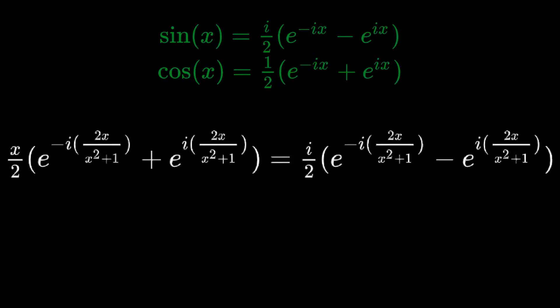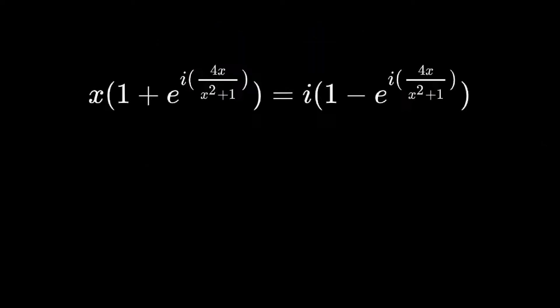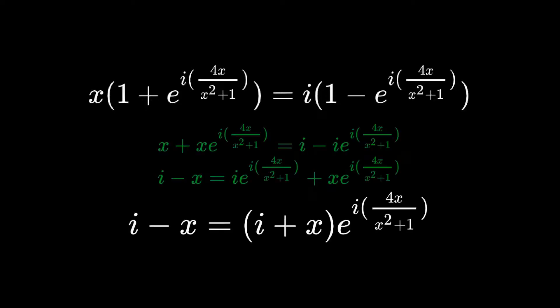Multiplying everything by 2e to the 2ix over x squared plus 1 gives us x times 1 plus e to the i4x over x squared plus 1 equals i times 1 minus e to the i4x over x squared plus 1. Some algebra gives us i minus x equals i plus x times e to the i4x over x squared plus 1.